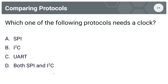Next question: which of the following protocols needs a clock? Options are A, SPI; B, I2C; C, UART; or D, both SPI and I2C. If you are a synchronous protocol, you share a clock signal. So it must be D, both SPI and I2C. UART is asynchronous and doesn't require a clock.